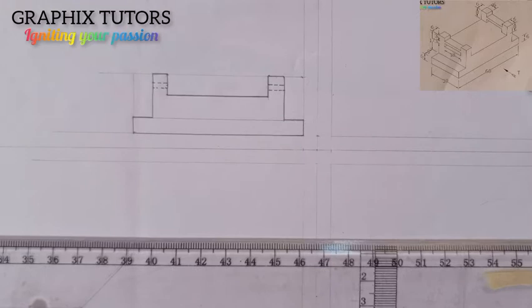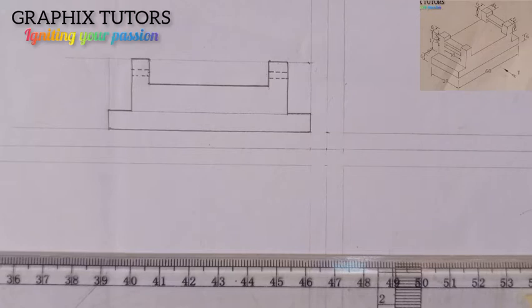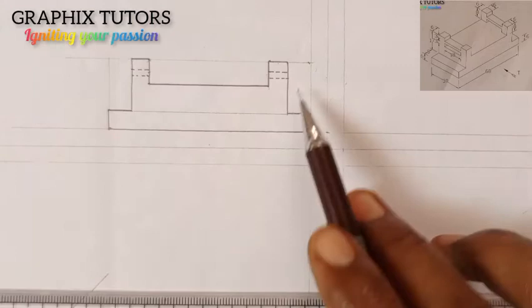That is the elevation we were told to draw — we've now completed the elevation. The next thing about first angle is that in third angle the plan is always on top of the elevation, but in first angle the plan is below the elevation. So our plan will be here, and to draw the plan you just need to project all those points downward.